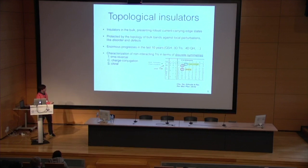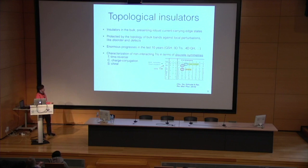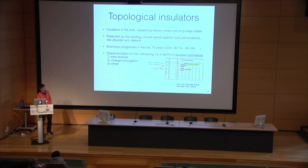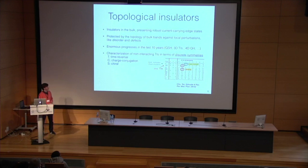Depending on whether the symmetries are present or absent, their eigenvalues, and the number of spatial dimensions the model is in, one can have invariants which are Z numbers — integer numbers — or Z2 numbers, just binary 0 or 1. For example, the Hofstadter model or Chern insulators have no symmetries and in two dimensions are characterized by the Chern number. While the chiral models I'm studying have chiral symmetry, and in one dimension are characterized by a Z number called the winding. This is what I'll be focused on in this talk.